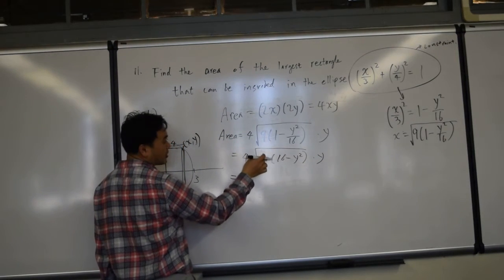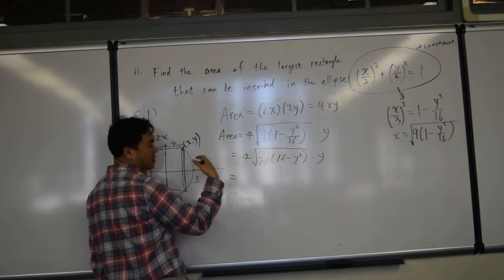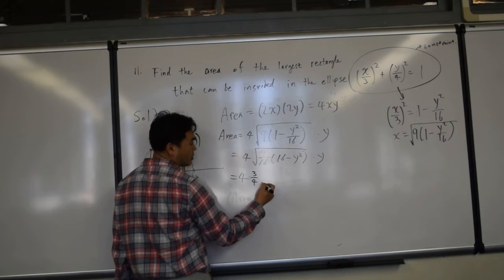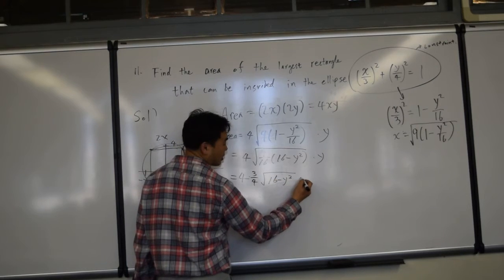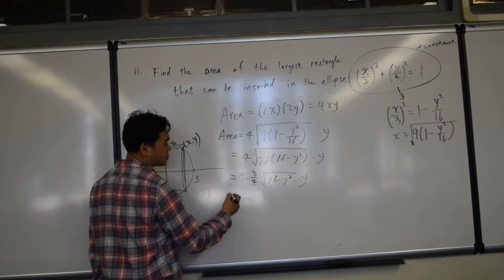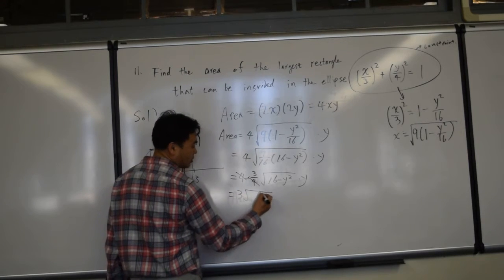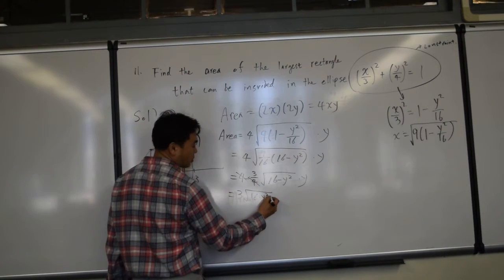And then 9 over 16, if I pull it outside, I have to take the square root, and that becomes 4 times 3 over 4, square root of 16 minus y squared times y. So 4, 4 cancels, and I get 3 times square root of 16 minus y squared times y.